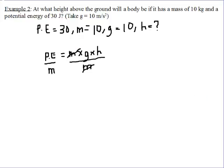Now what are we left with? We are left with gravity times height. So potential energy over mass is now equal to gravity times height. Now we want to get rid of gravity, so we divide both sides by gravity.